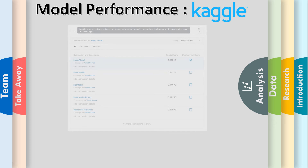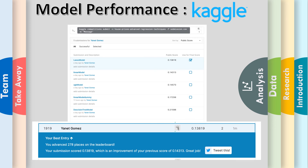This is how our models are doing on Kaggle. As you can see, the Lasso model is currently doing the best out of all of them, while the decision tree is doing the worst. I want to focus next on the XGBoost model and see if we can improve it and move up.